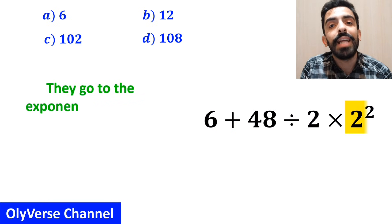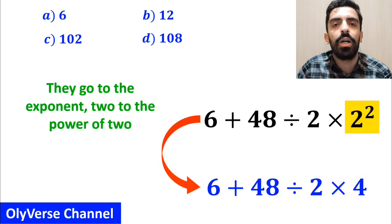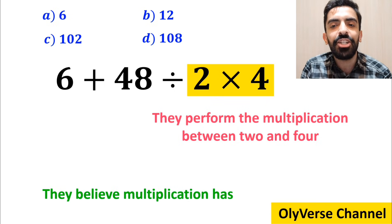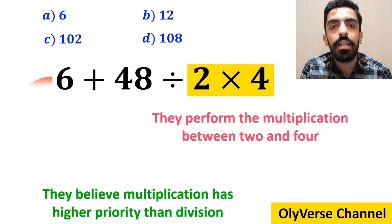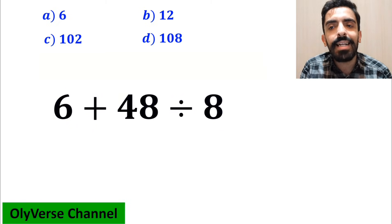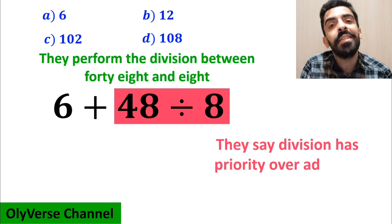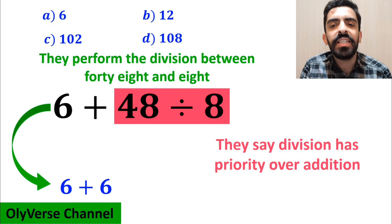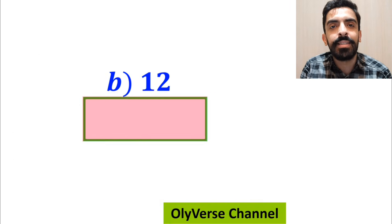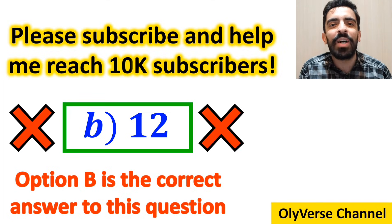In the next step they go to the exponent 2 to the power of 2 and simplify to 6 plus 48 divided by 2, then times 4. Then they perform the multiplication between 2 and 4 because they believe multiplication has higher priority than division, writing 6 plus 48 divided by 8. Next they perform the division, simplifying to 6 plus 6, giving the answer 12. They conclude that option B is the correct answer — however, it's not correct.